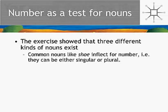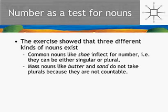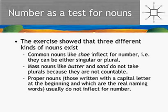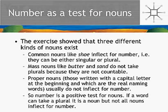That's because there are three kinds of nouns. There are common nouns like 'shoe', which inflect for number and can be singular or plural. There are what are called mass nouns — butter, sand, gravel — which you can't count; that's not the way the language likes it. And then there are proper nouns — the real naming words, which are the real names of people, places, and so on — and those don't inflect for number either. So number is a positive test: if a word can take a plural, it is a noun. But not all nouns inflect for number. Once you know there are mass nouns and proper nouns, you can generally figure out which ones those are.